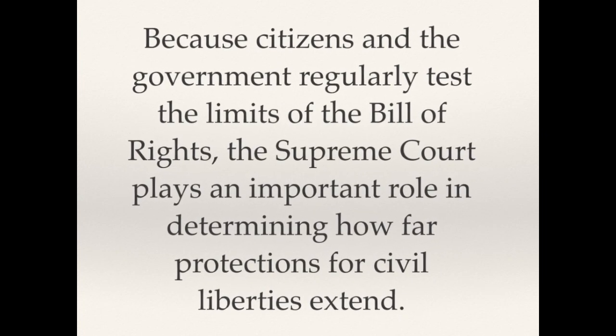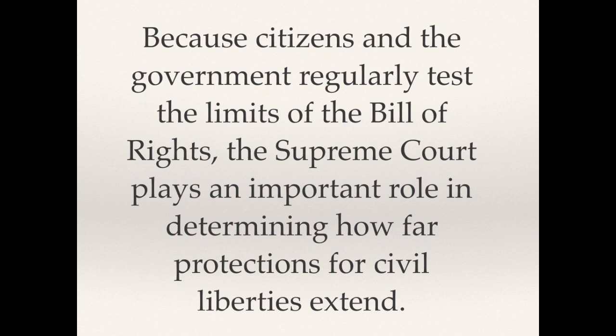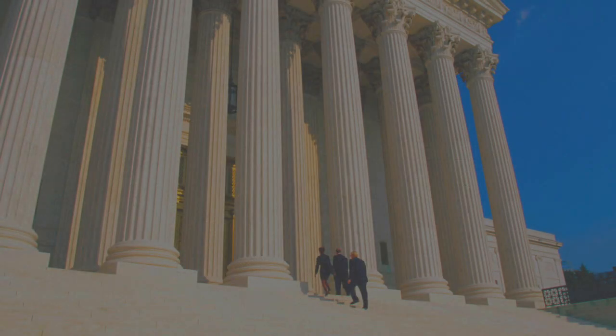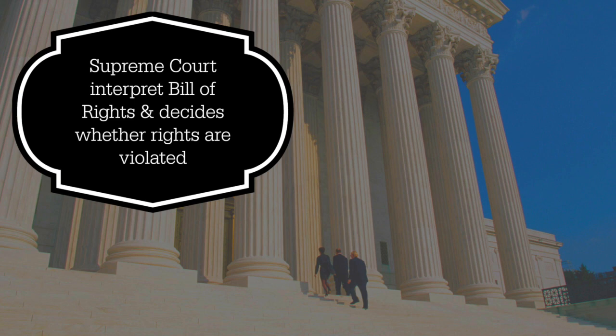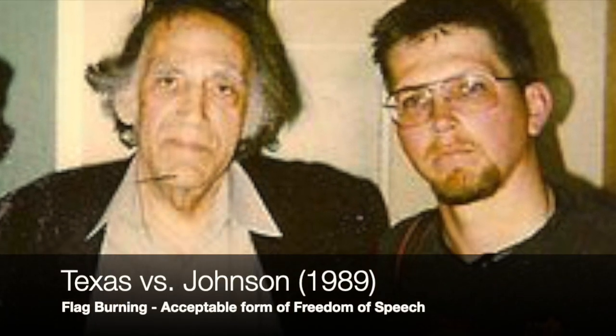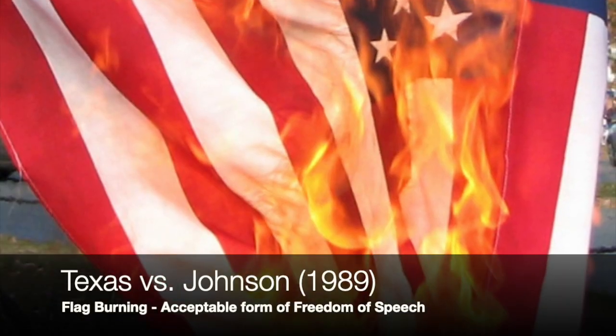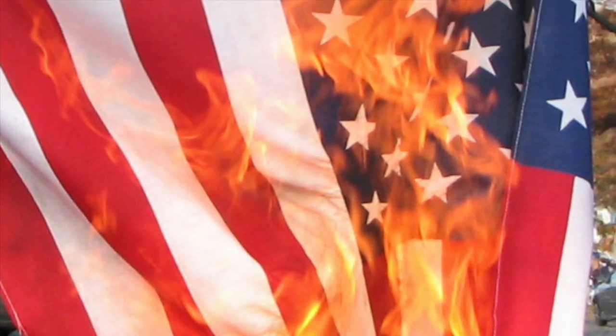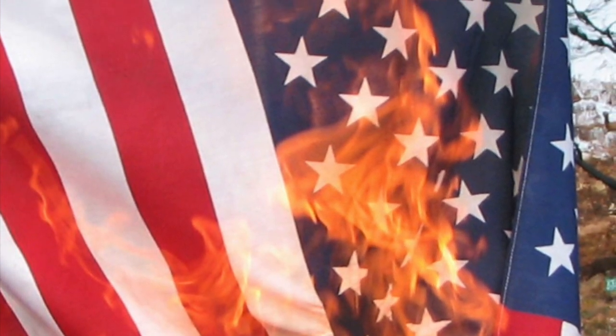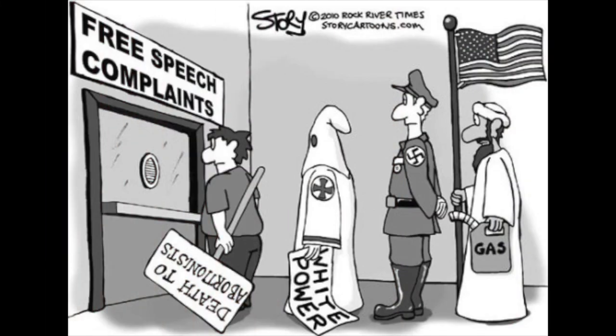Because citizens and the government regularly test the limits of the Bill of Rights, the Supreme Court plays an important role in determining how far protections for civil liberties extend. It falls to the Supreme Court to interpret the Bill of Rights and to decide if the government has violated an individual's civil liberties. For example, in the 1989 Supreme Court case Texas v. Johnson, the court determined that making a political statement by burning a flag is constitutionally protected symbolic speech. The court also helps determine the degree to which civil liberties can be restricted and the types of speech not protected by the Constitution.